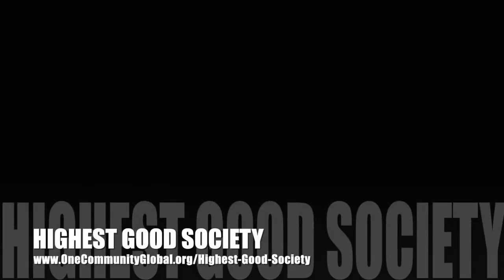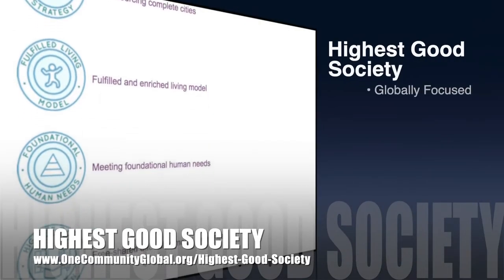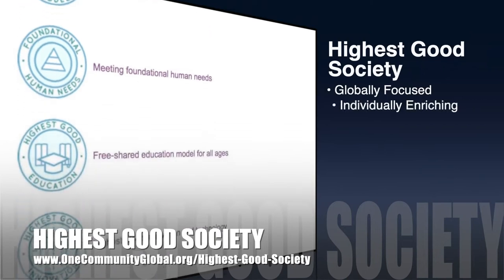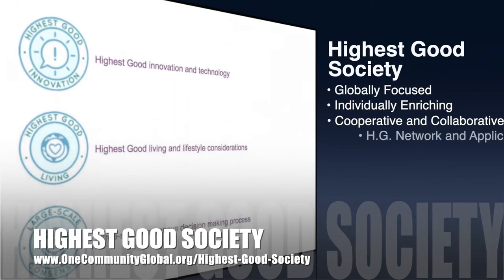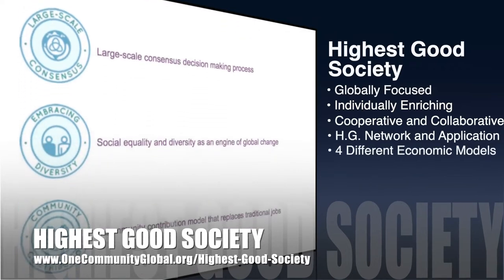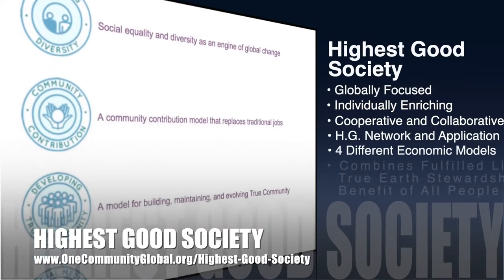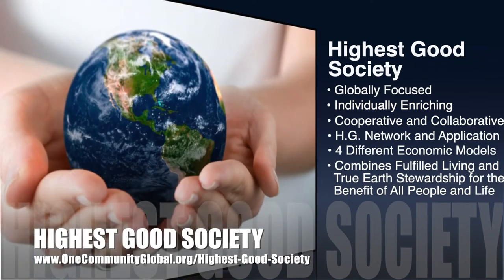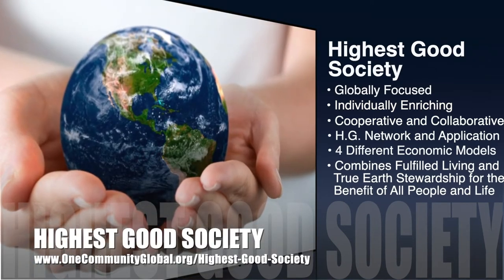The One Community Approach to Highest Good Society is globally focused, individually enriching, cooperative and collaborative, includes a Highest Good network and application, four different economic models, and combines fulfilled living and true Earth stewardship for the benefit of all people and all life on this planet.